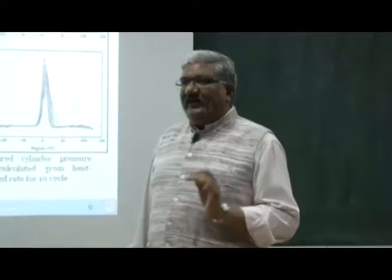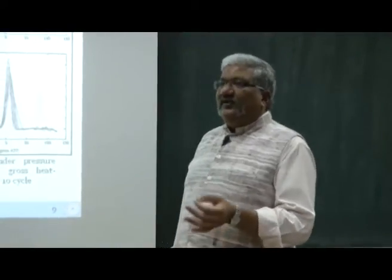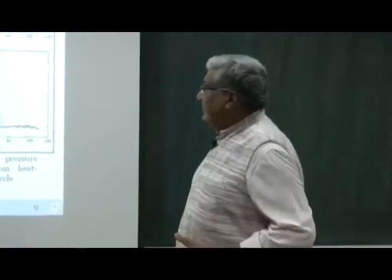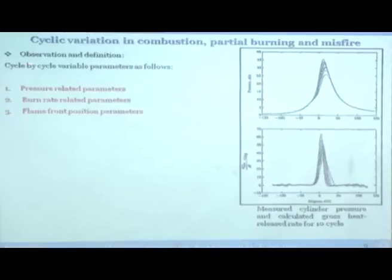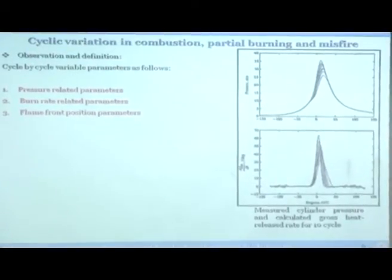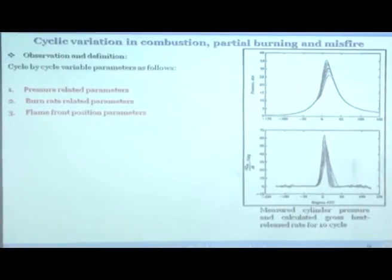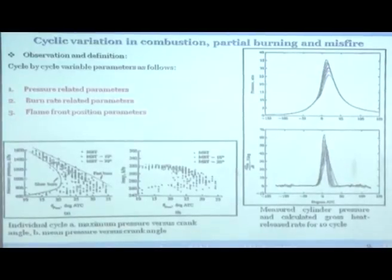Wherever we do combustion analysis, we never acquire combustion data for just one or two cycles. We always acquire for a large number of cycles — a minimum of 200 to 250 cycles — and then do the heat release analysis. Regarding cycle-by-cycle variations, pressure-related parameters, burn rate parameters, and flame front position parameters all vary because of cyclic variability.